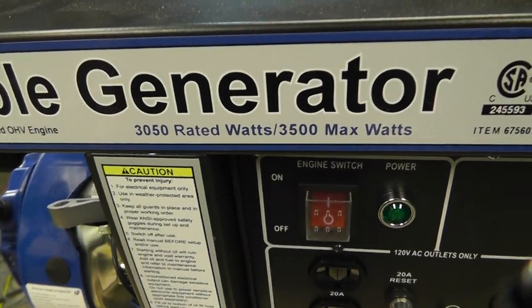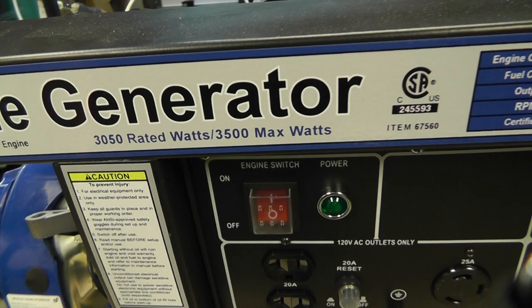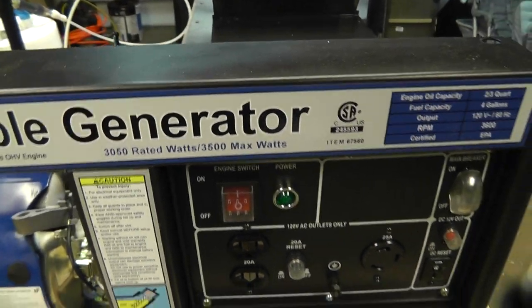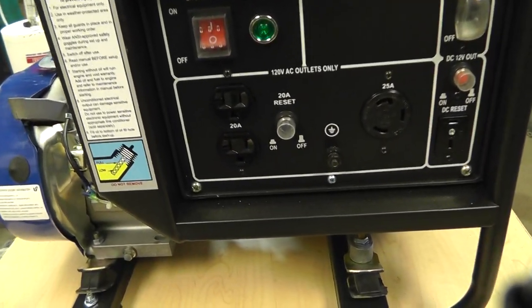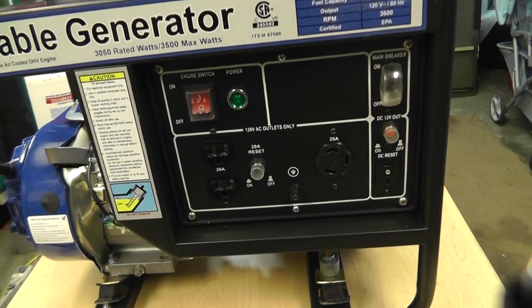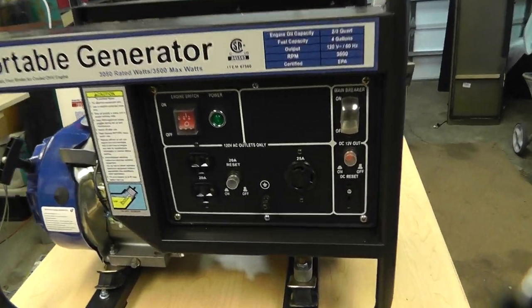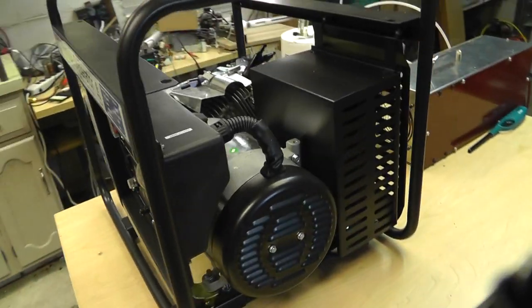So again, this is a generator. Right here's your rated watts, 3050, 3500 max. This is actually only a 20 amp, 25 amp, 120 volt. It's also got the DC output. Right now I'm not running anything off this. Basically, what I want to show you is the actual least amount of hydrogen you can put into an engine just to get it to idle. I am considering idle in this video the least amount to just keep it rotating.